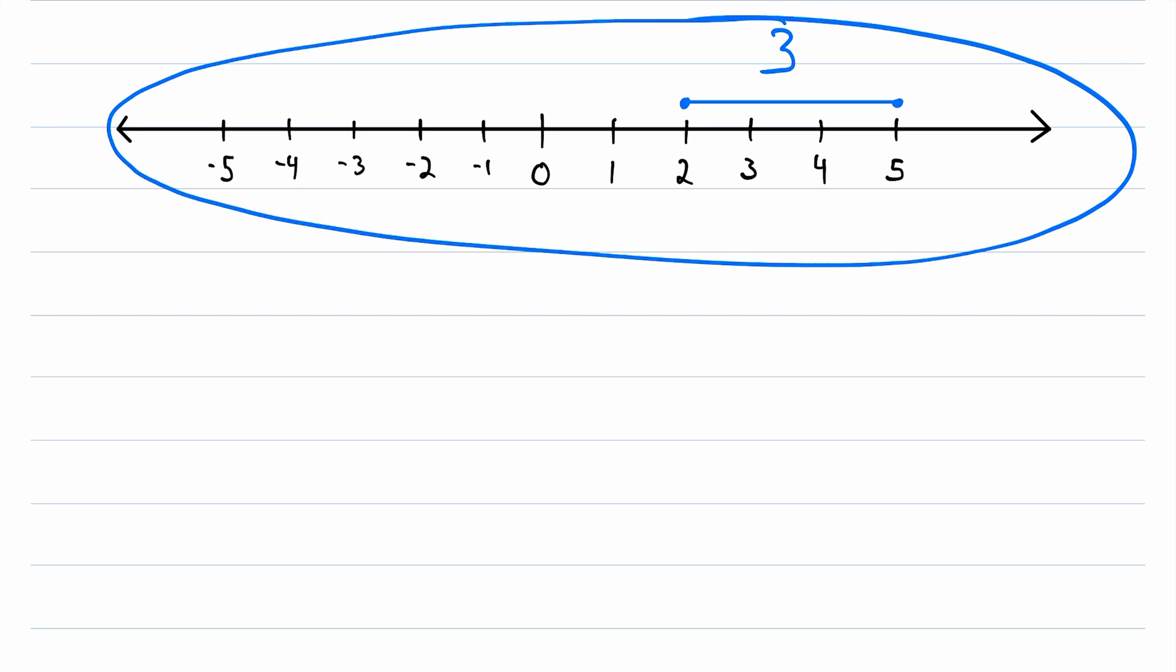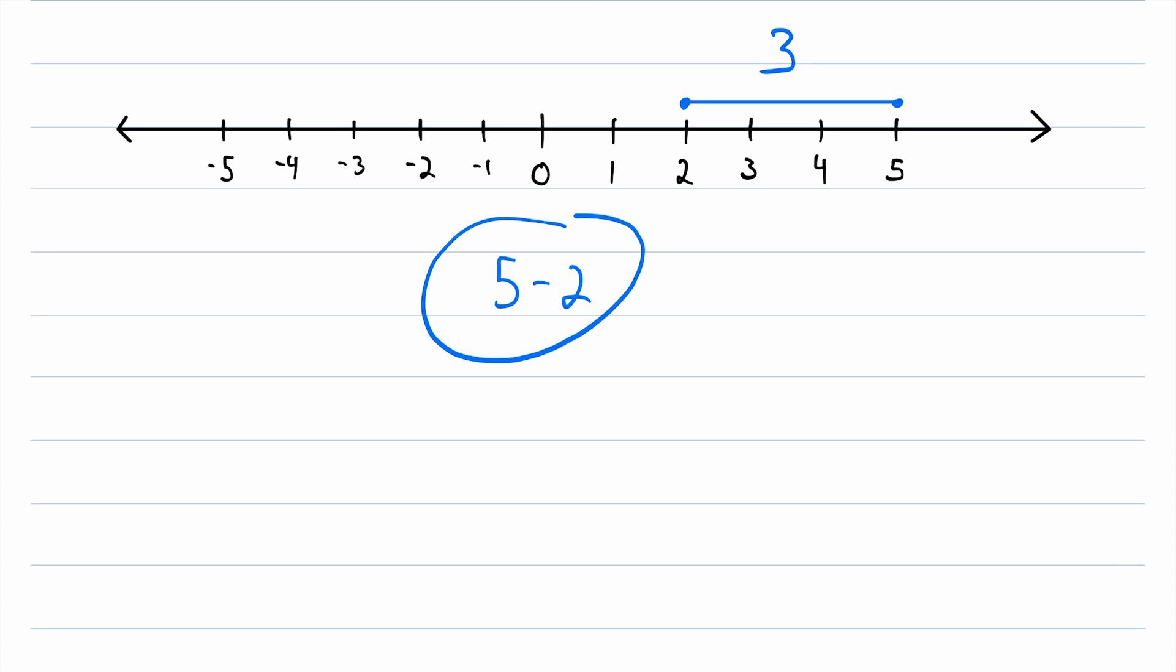But we don't want to have to count units on a number line every time we want to find the distance between two numbers. So what we want is some mathematical operation that we can use to find the distance between two numbers. And at first, it might seem that subtraction is promising, because for example, 5 minus 2 is 3. And as we saw here, 3 is the distance between 2 and 5.